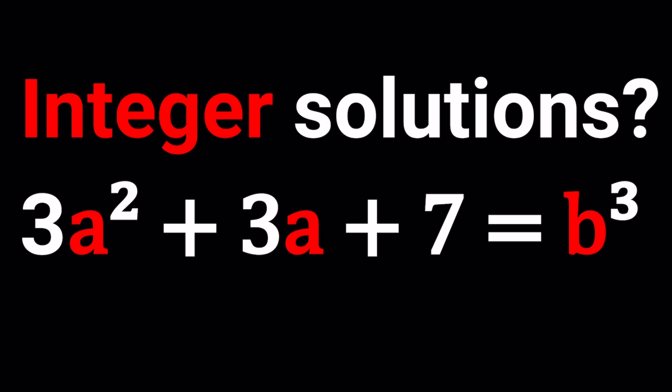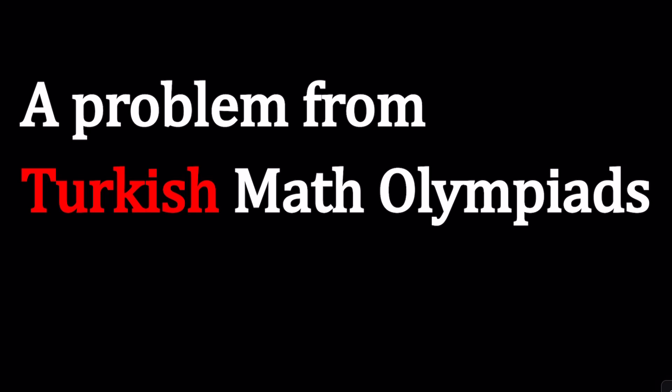We have 3a² + 3a + 7 = b³, where a and b are integers, and we're going to be looking for solutions to this equation. This is called a Diophantine equation because the solutions are integers, and this problem is actually from the Turkish Math Olympiads.